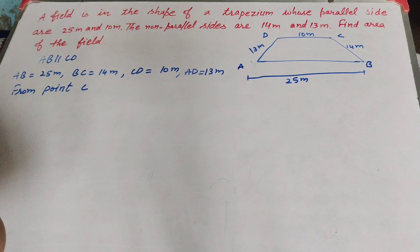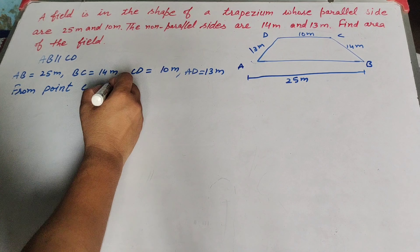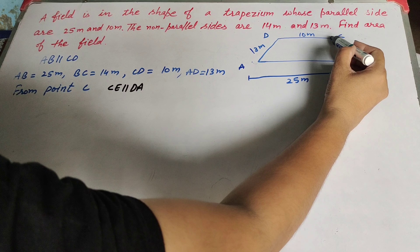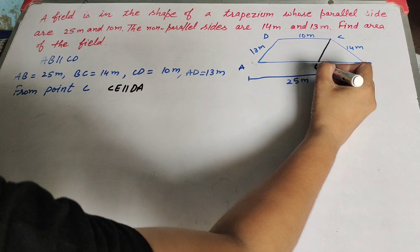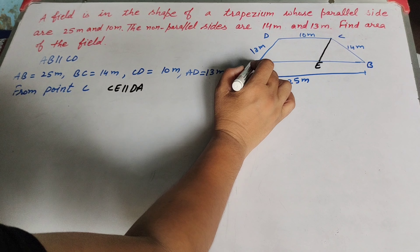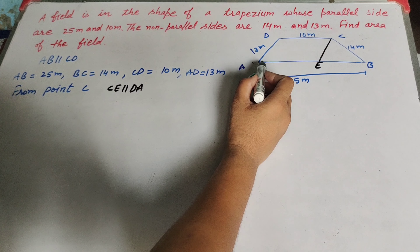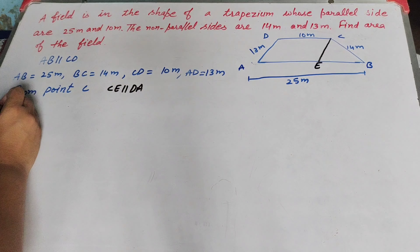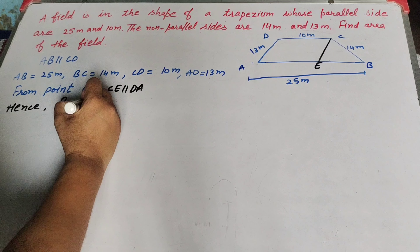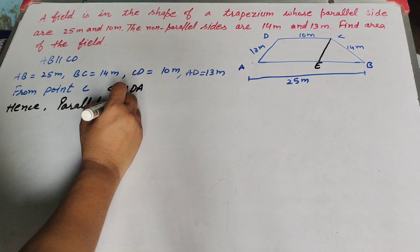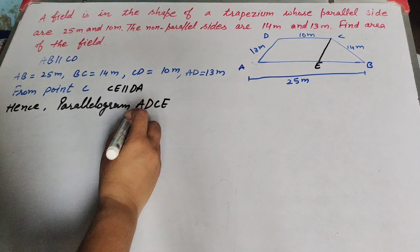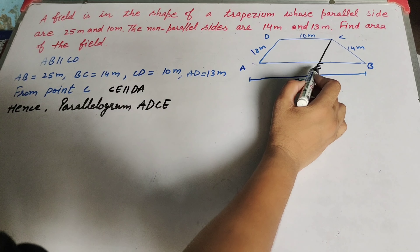From point C, we draw a line CE parallel to DA on AB. CE is parallel to DA. So now AECD is a parallelogram. In parallelogram AECD, the opposite sides are equal.